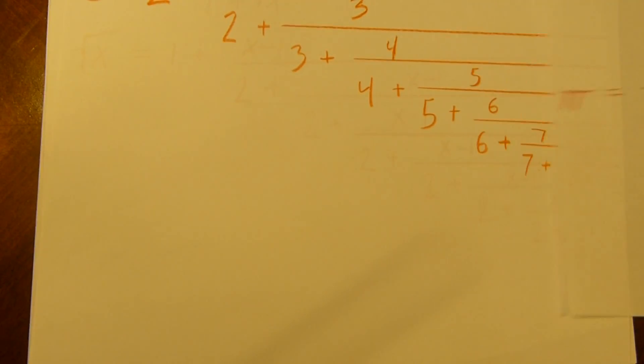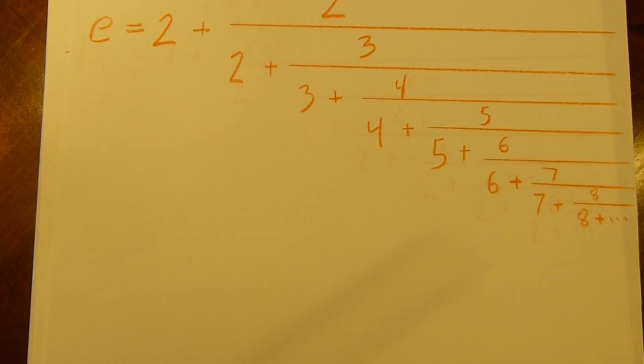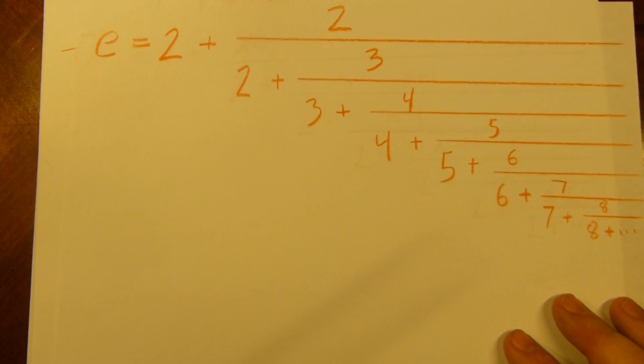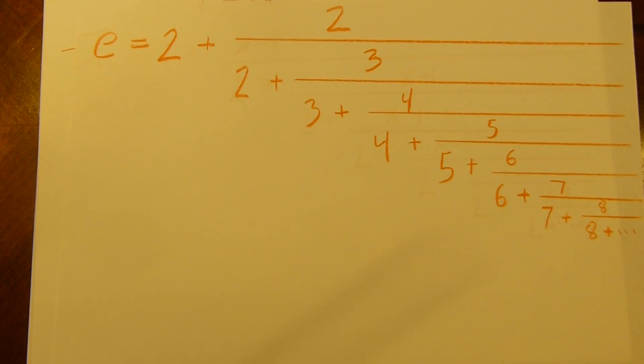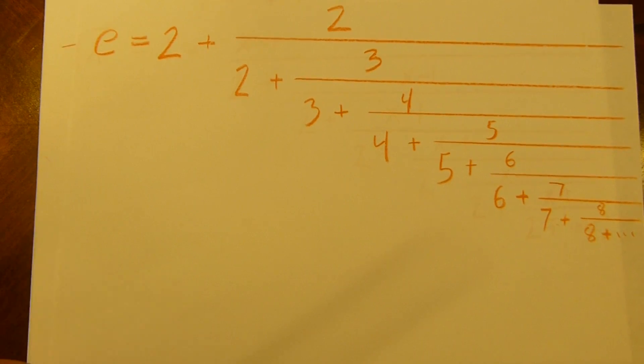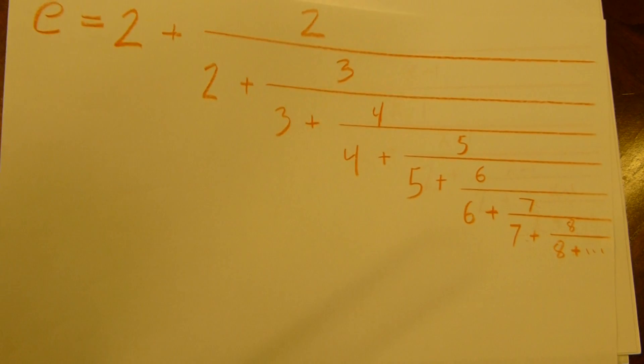Likewise, the number e. Everybody loves the number e. I love the number e. 2 plus 2 over 2 plus 3 over 3 plus 4 over... Yeah, I won't try to read all that. I confuse myself. But yeah, that's what e is. And that's a very interesting pattern.